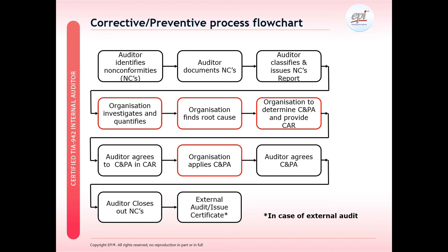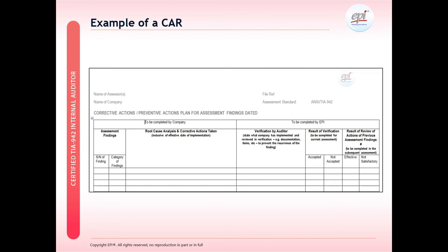The organisation may consult with consultants if required to identify the root cause of the issue or finding. The organisation will then determine an appropriate corrective action or preventative action to mitigate against the root cause and provide a corrective action report with the plan. We also provide during the training an example of the corrective action report showing the various steps in the process: the assessment findings, analysis of the root cause, the auditee provides a corrective action plan, the auditor verifies if that plan is suitable, all the way through to acceptance of the corrective or preventative action.